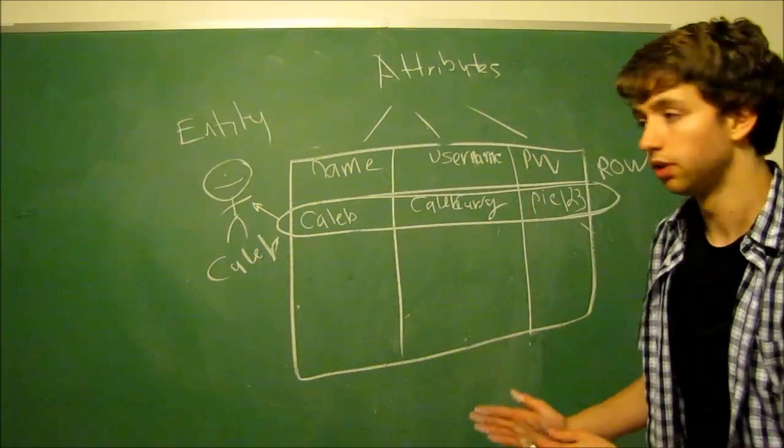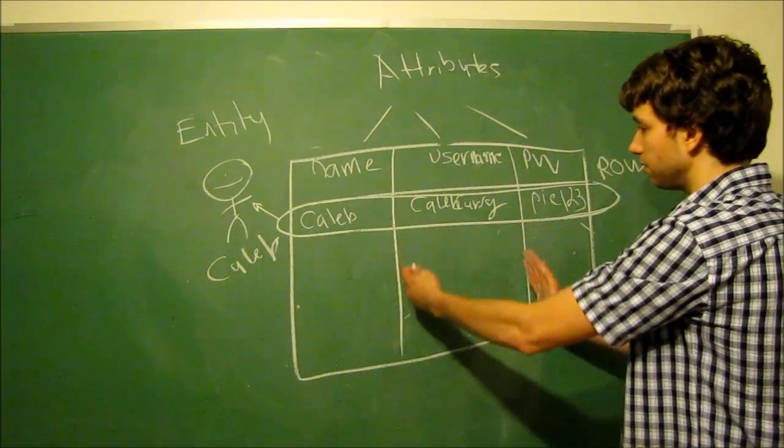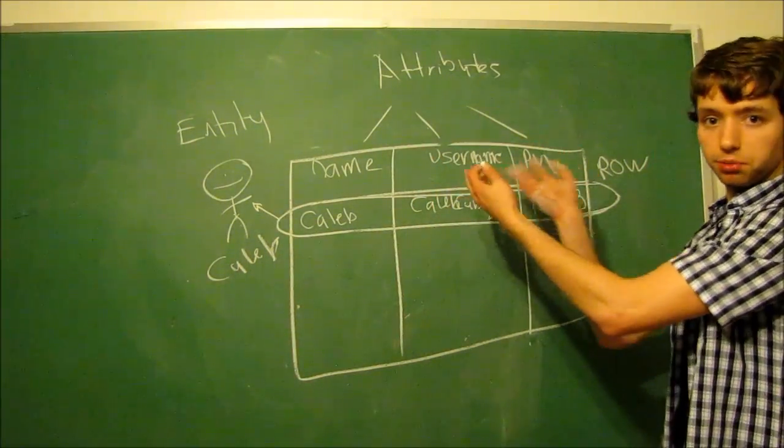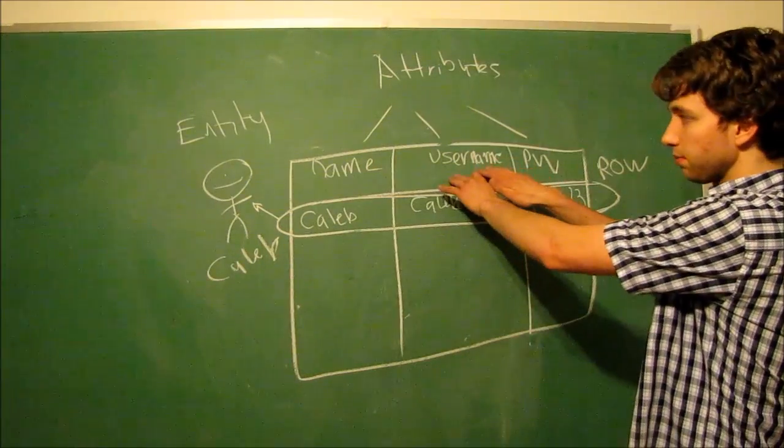So this row, it would be easier just to go like this. This row points to that entity, that person. Pretty simple. A column are all of the values for a specific attribute type. So the attribute type is username.